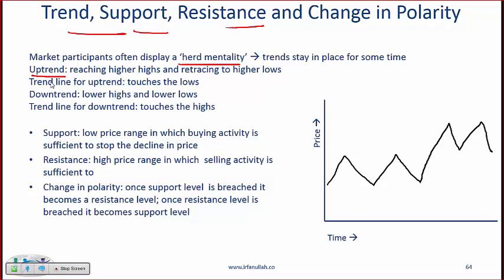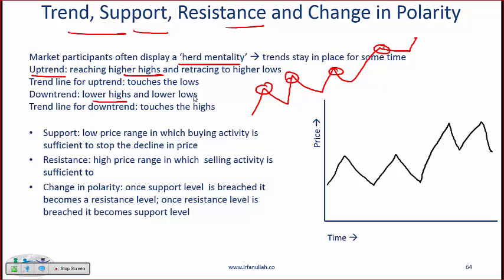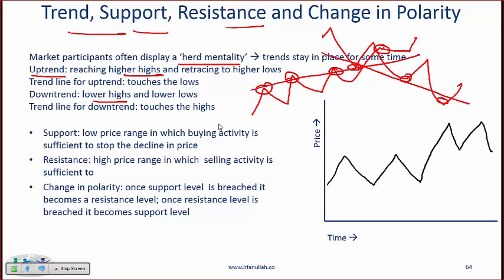You need to know these terms. An uptrend is where a market reaches higher highs — if every successive high is higher than the previous high, we have an uptrend. A downtrend means the market has lower lows — if the lows are progressively lower, we have a downtrend. To correct an earlier statement: the trend line for the uptrend touches the lows, and the trend line for the downtrend touches the highs. I'd emphasize again that you need to go look at these charts in the curriculum.